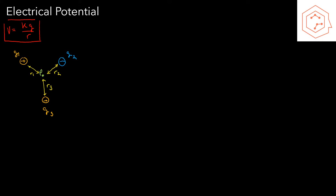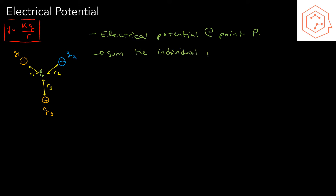When it comes to a system of charges, not a lot changes. If we want to find the electrical potential at point p within the system, all we have to do is sum the individual potential contributions from each charge. The electrical potential at p equals the sum of the potentials from each charge: V_p = V1 + V2 + V3.